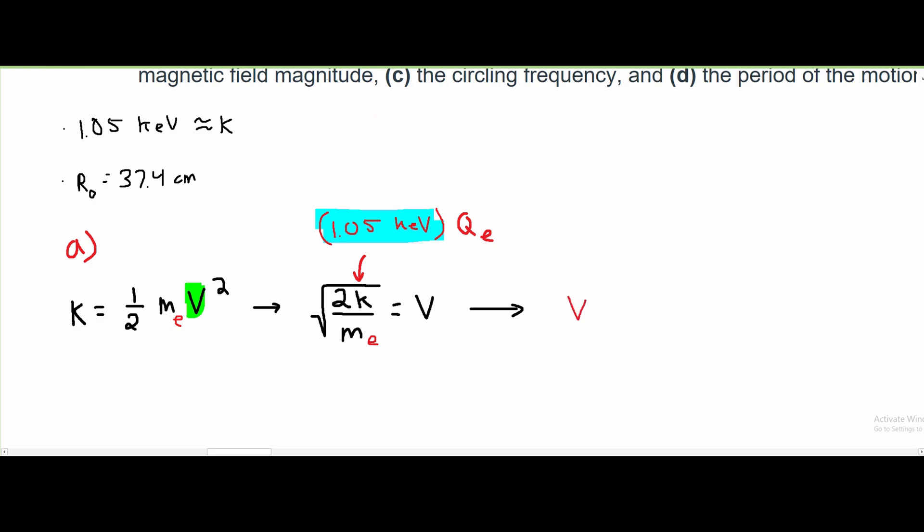So we're going to have v equal to the square root of the numerator part, which is 2 times our k. And our k is going to be 1.05 times 10³ eV, and also the charge of an electron.